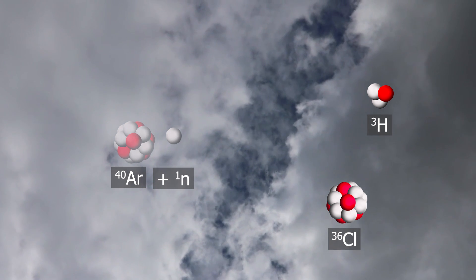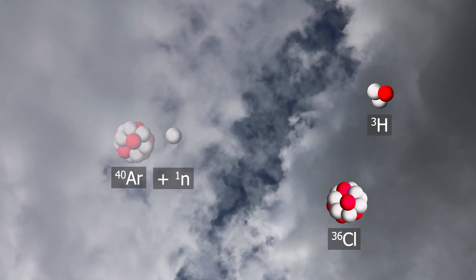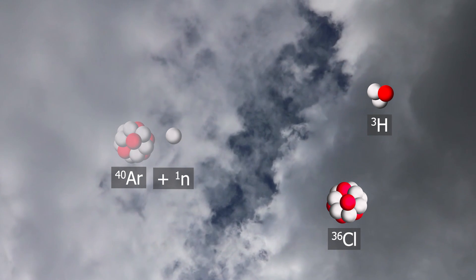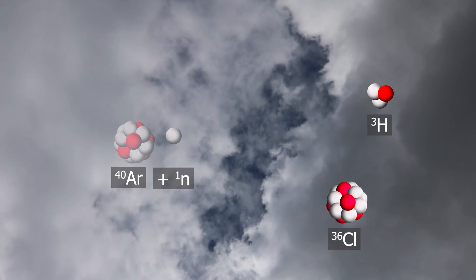This would falsify the measurement results. Due to this meteoric Chlorine-36, the surface of silicate rocks must be removed with hot hydrofluoric acid.